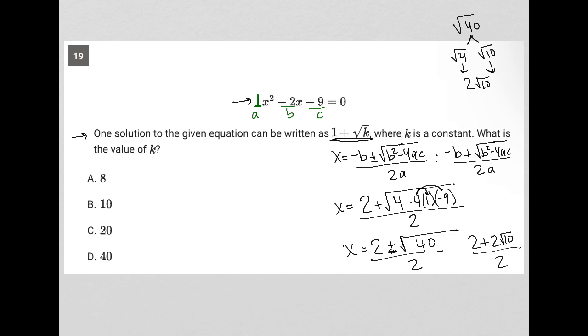So I get 2 root of 10, all over 2, and then 2 can cancel out with itself here, so 2 goes into itself once, leaving me with 1 plus root 10 as my answer.